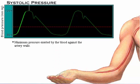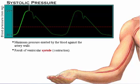Systolic pressure is the maximum pressure exerted by the blood against the artery walls. It is the result of ventricular systole — contraction — and is normally about 120 millimeters of mercury.